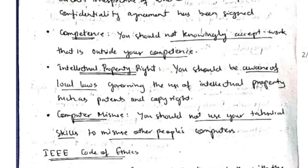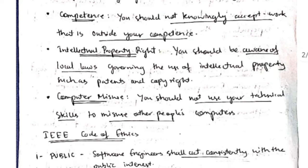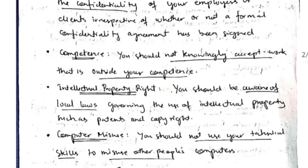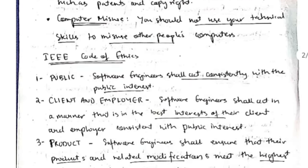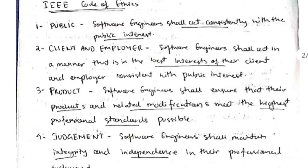The second point is competence — whatever work you can truly do, that is what you should accept; you should not make false statements about your capabilities. Third is intellectual property rights — you should be aware of local laws and copyright issues. Fourth, you should not misuse your computer by using your skills unethically.